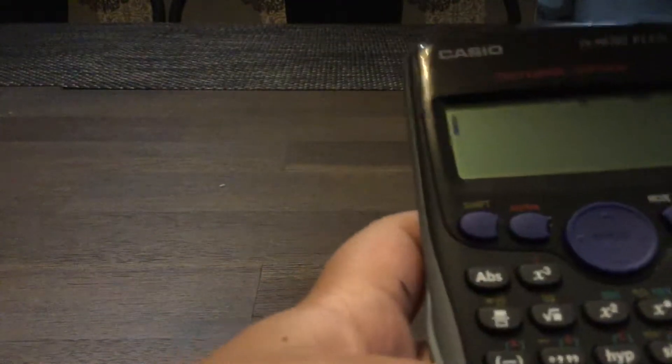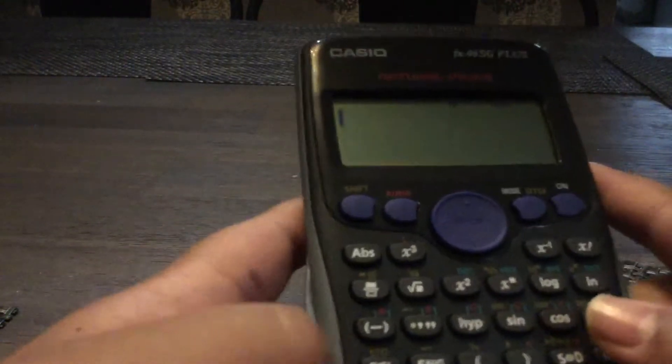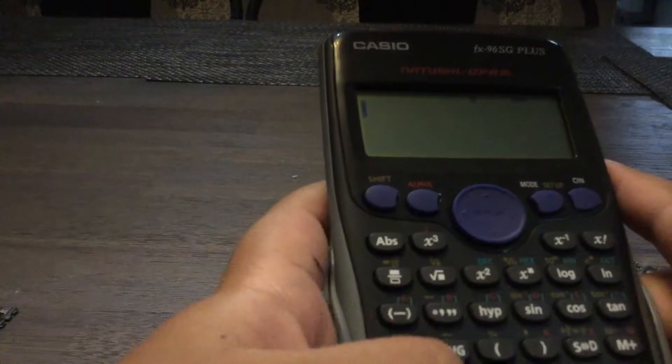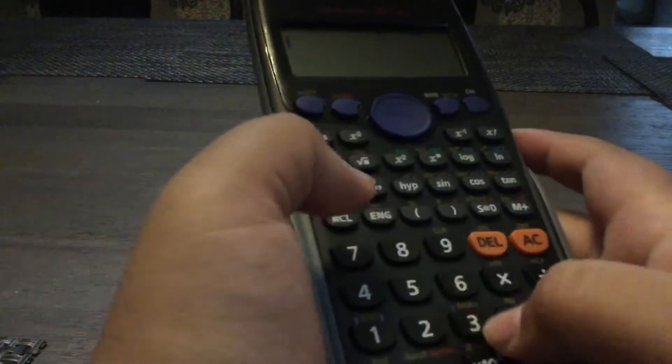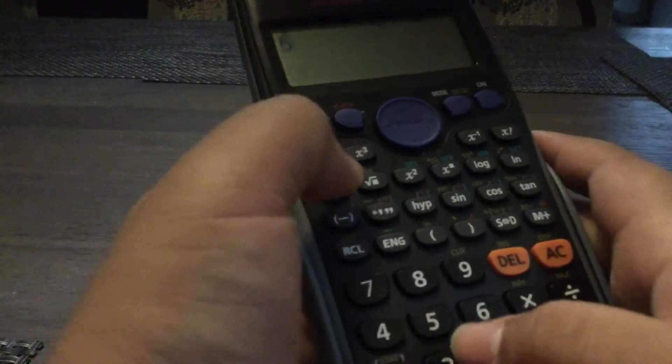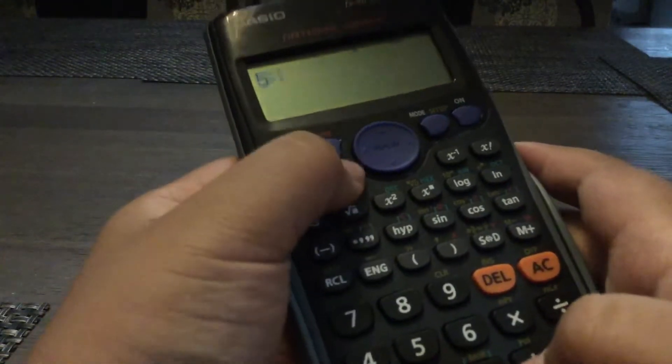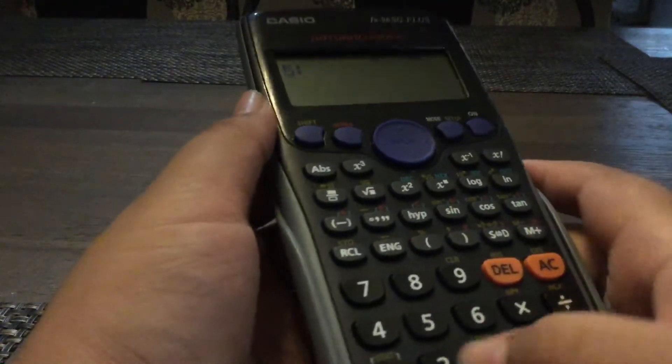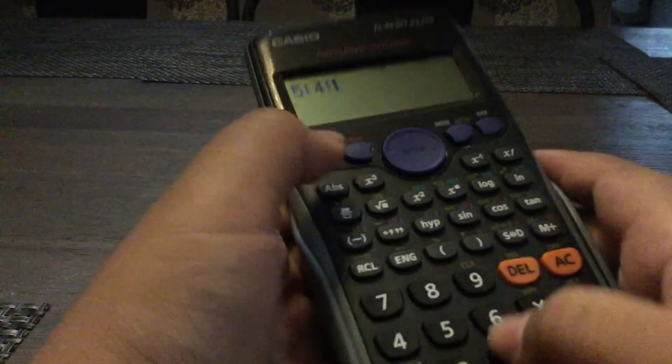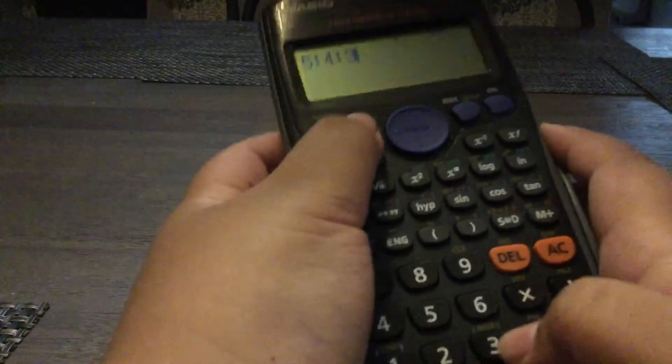Next one is quite fun. This is like a random thing you can put. For example, you want to put five, press alpha, then press x³. You see that. Then four alpha x³.